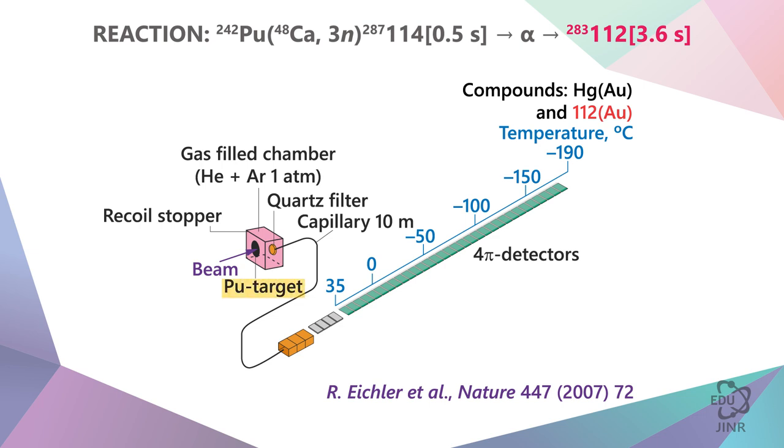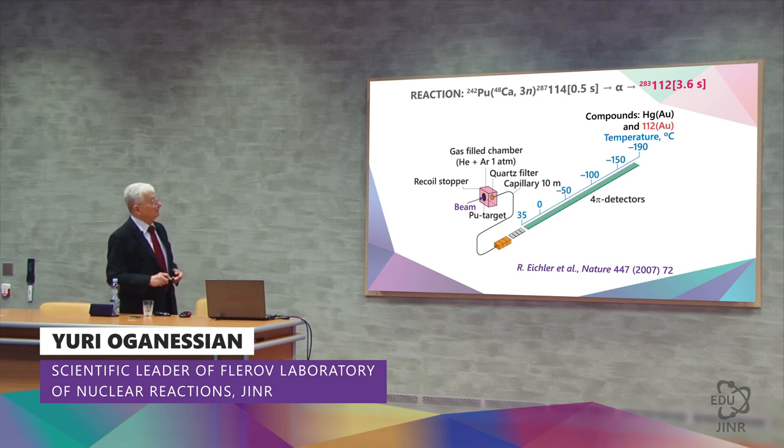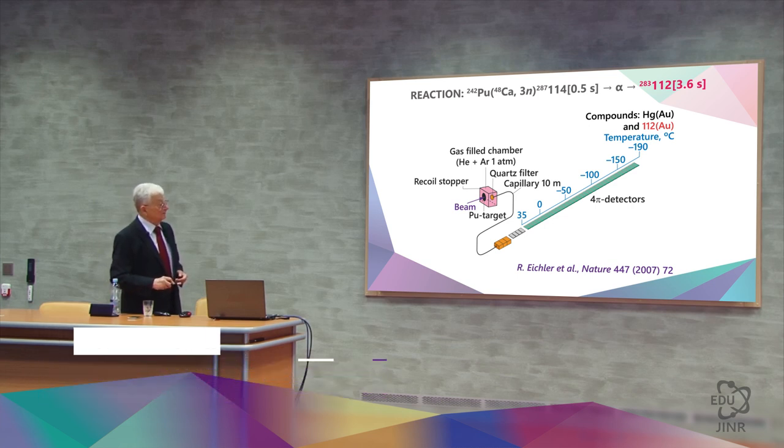When placing plutonium here and irradiating it with a beam, the recoil nuclei will stop here in this box, which is filled with helium. With the help of a capillary, we will remove this helium along with the nuclei that formed there and pass them through a system of detectors with a size of 1 cm by 1 cm on either side.